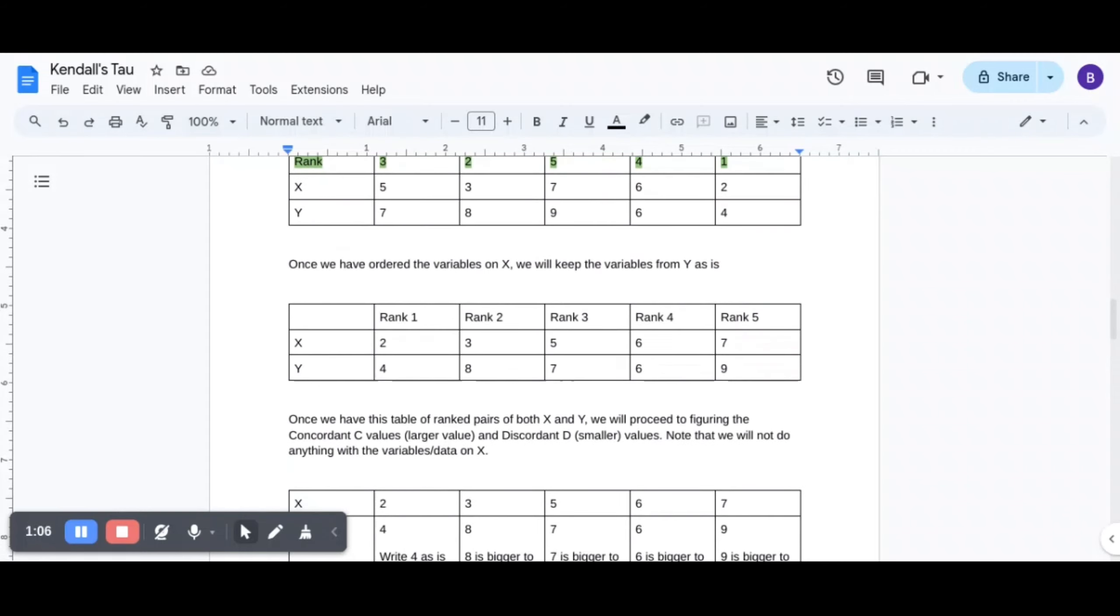So you see rank 1, rank 2, rank 3, rank 4, rank 5 and I have just ordered it. So I have shifted 2 from the extreme right to the extreme left, right? And that's how I proceeded.